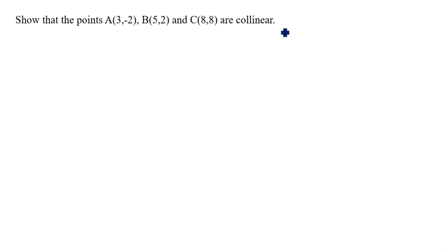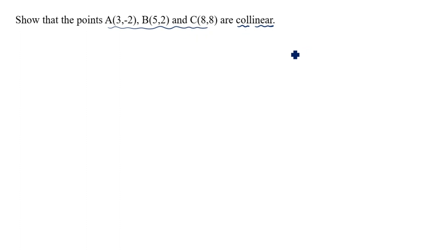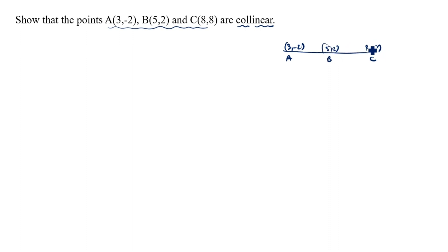...and C(8, 8) are collinear. 'Collinear' — 'col' means together, 'linear' means line. Collinear points are three or more points that lie on the same line. So A, B, C lie on the same line. A is (3, -2), B is (5, 2), C is (8, 8).